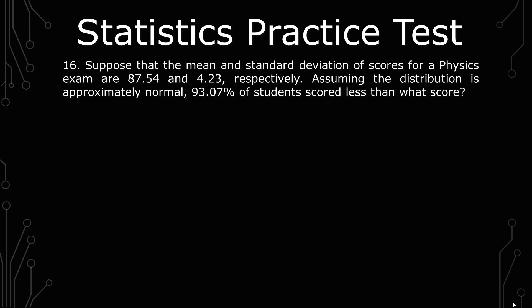The question states, suppose that the mean and standard deviation of scores for a physics exam are 87.54 and 4.23 respectively. Assuming the distribution is approximately normal, 93.07% of students scored less than what score?